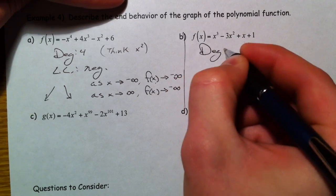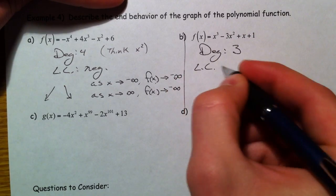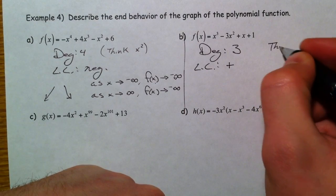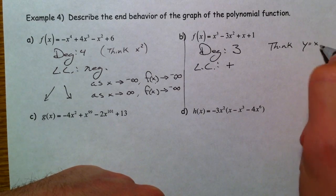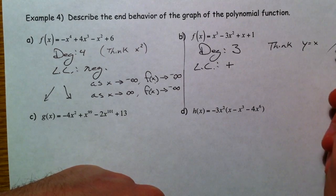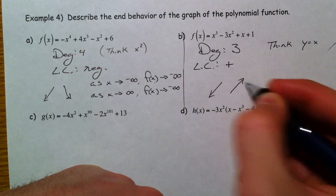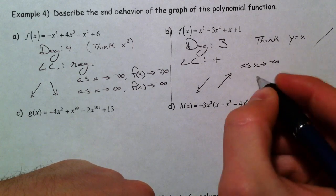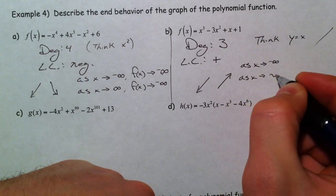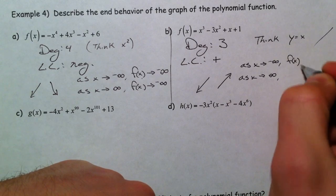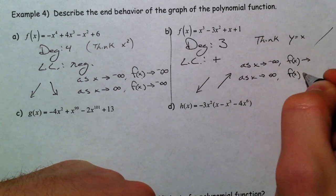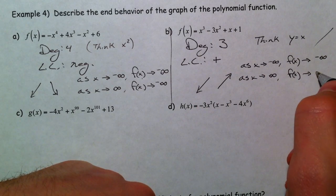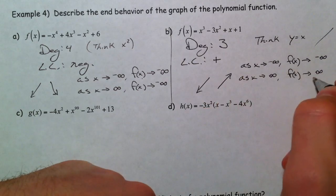Degree 3, leading coefficient positive. Think y equals x — just your positive line. Down to the left, up and to the right. It might do funky things in between. As x goes to negative infinity — as x goes to the left — y goes down to negative infinity. And as x goes to the right, y goes up to positive infinity.